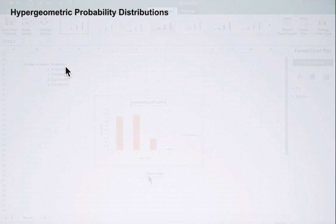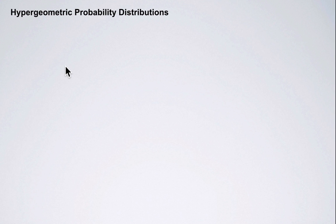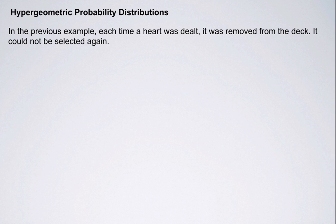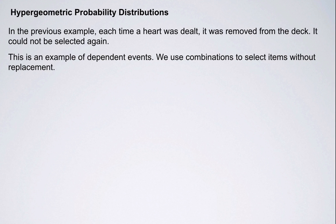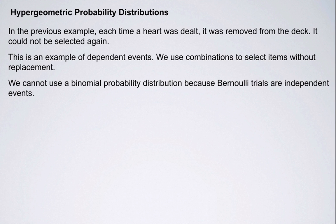This is an example of a hypergeometric probability distribution. In this example, each time a heart was dealt, it was removed from the deck and it could not be selected again. So these are examples of dependent events, and we use combinations to select items without replacement. We can't use a binomial probability distribution here because Bernoulli trials are independent events.